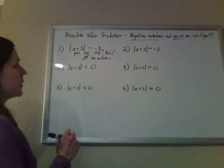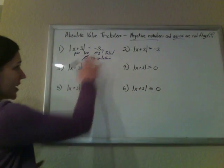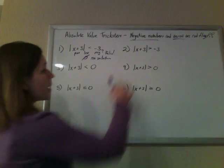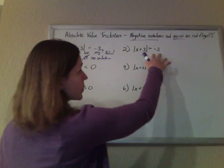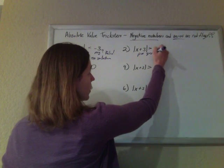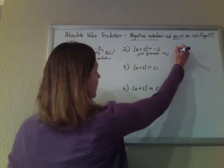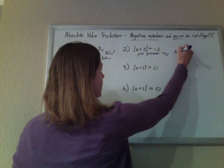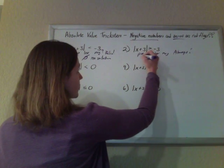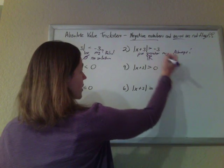Just think of it: a positive number less than a negative? Never. No way. But how about a positive number greater than a negative number? Yeah, that's always true. So this is our all-real-numbers case.